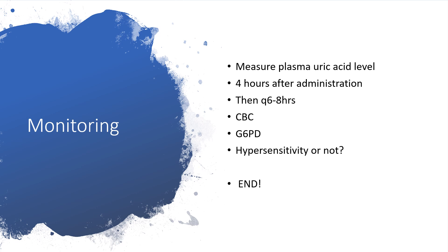For monitoring, measure the plasma uric acid level four hours after administration of Rasburicase, then every six to eight hours. You can also measure a complete blood count and screen for G6PD deficiency. Determine whether the patient has become hypersensitive to this medication so that you will not administer it next time.